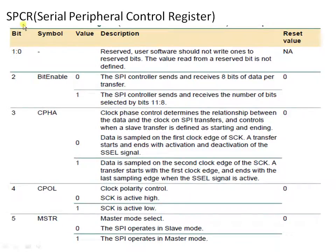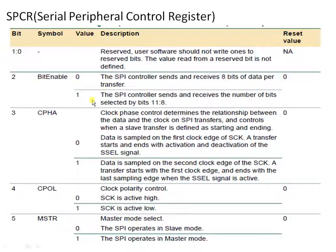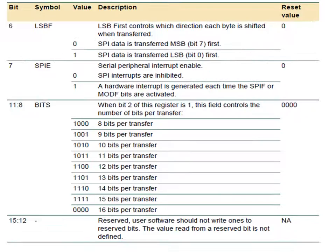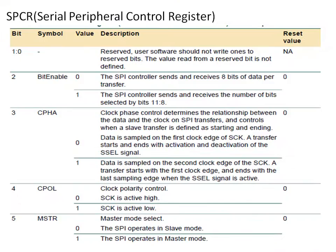Let us start with SPCR, the serial peripheral control register. It is a 16-bit register, and we use only some bits while the remaining are reserved. The second bit is the bit enable. With this bit we can select the number of bits used to represent a single character. If programmed to logic 0, we represent a single character with only 8 bits, meaning we go with ASCII representation. If programmed to logic 1, we can represent a single character in the range of 8 to 16 bits. We can select the number of bits using bits 8 to 11. If you want more than 8 bits, program bit enable to 1.